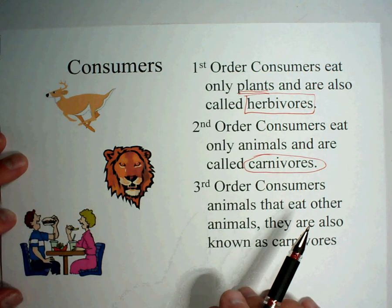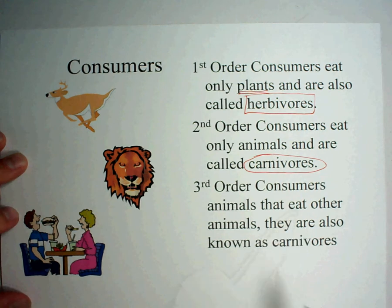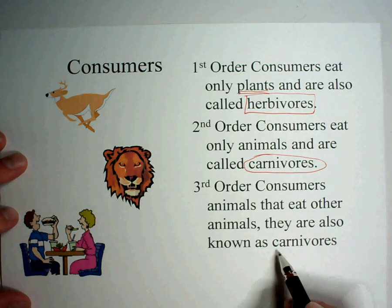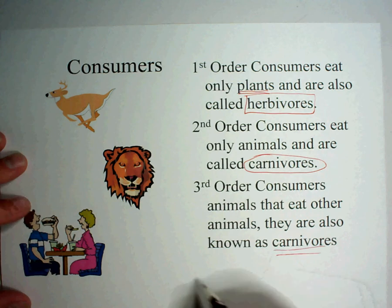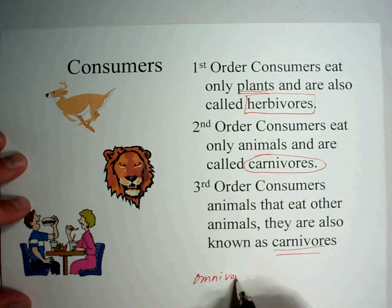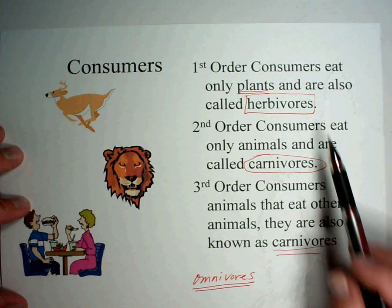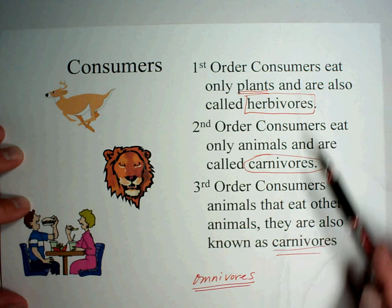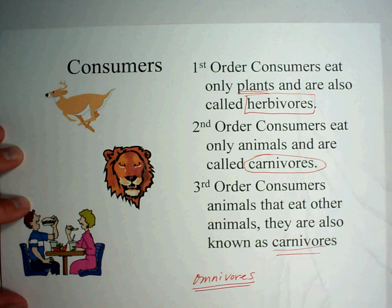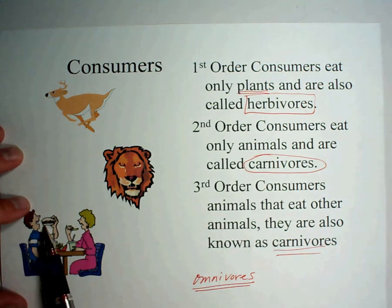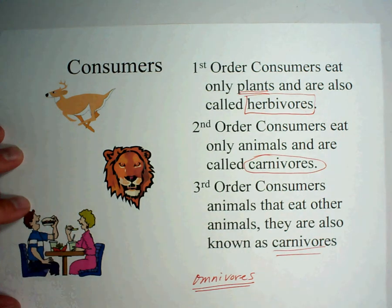Third order consumers are animals that eat other animals — they're also carnivores. We, as humans, are typically what is called omnivores: we are carnivores sometimes, and we are herbivores too. We eat both plants and animals. We're omnivores, but we're third order consumers — like the hamburger in the picture, we eat other animals.